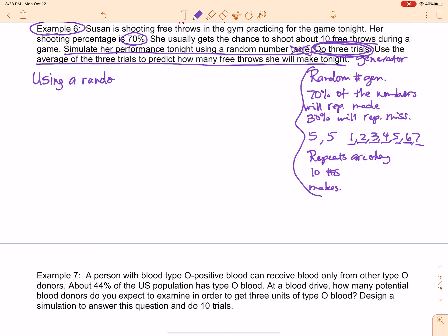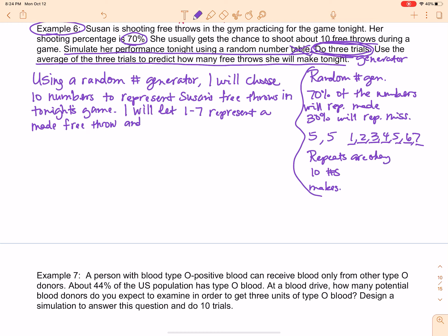Using a random number generator, I will choose 10 numbers to represent Susan's free throws in tonight's game. I will let 1 through 7 represent a made free throw and 8, 9, and 10 will represent a miss.